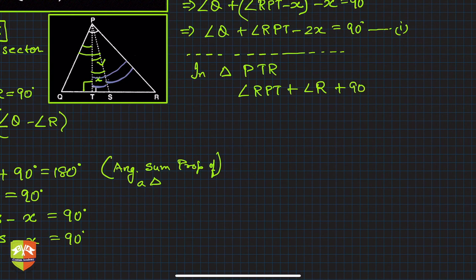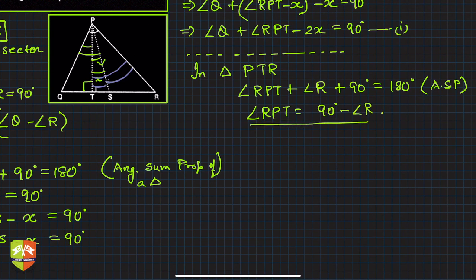So ∠RPT, right, can be written as—if you see, 180 - 90, that is 90 degrees minus ∠R. From this, this is equation 2.